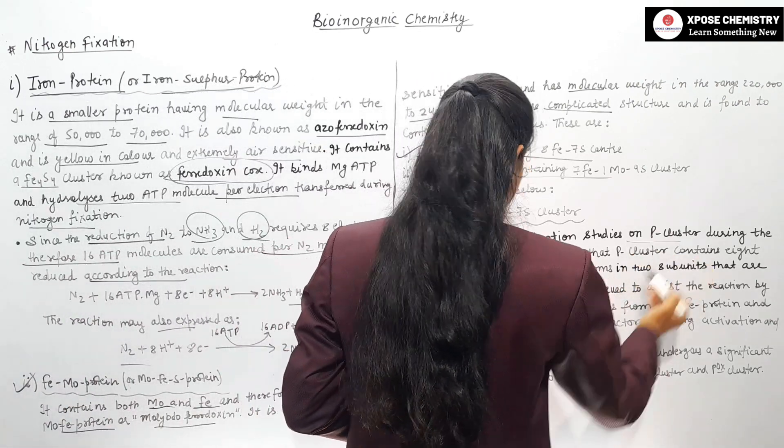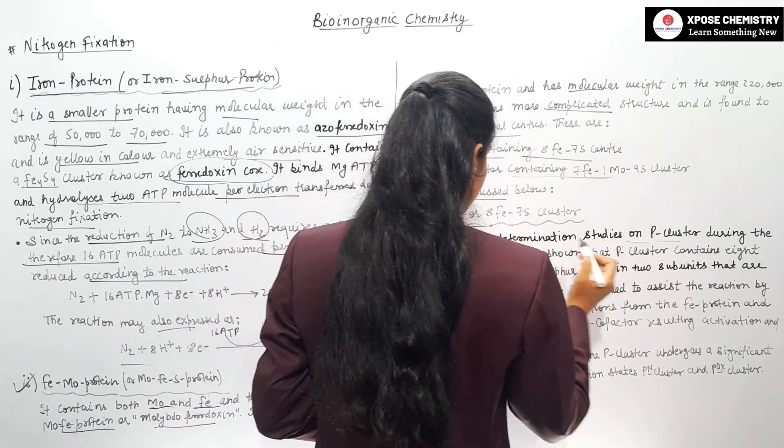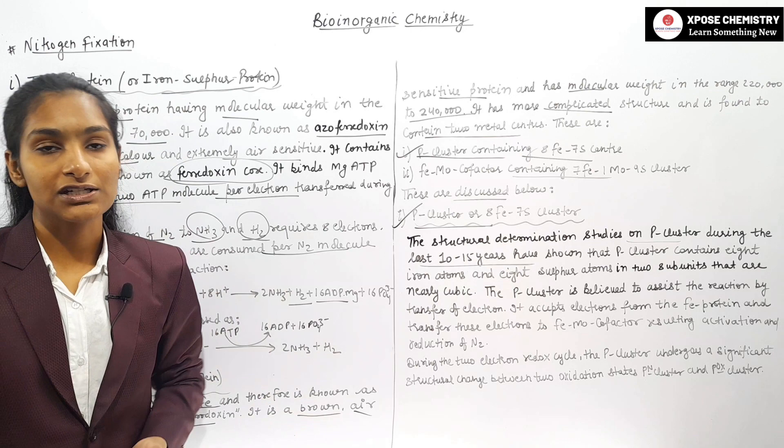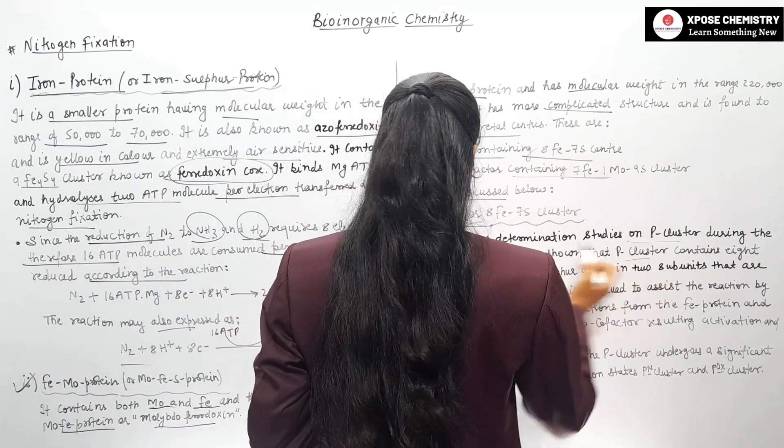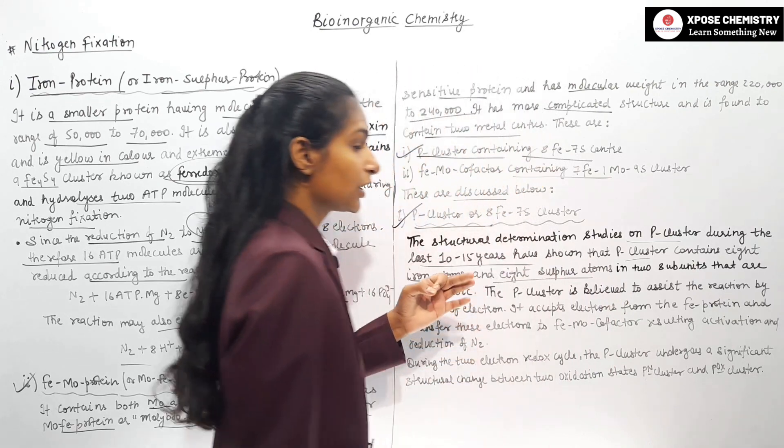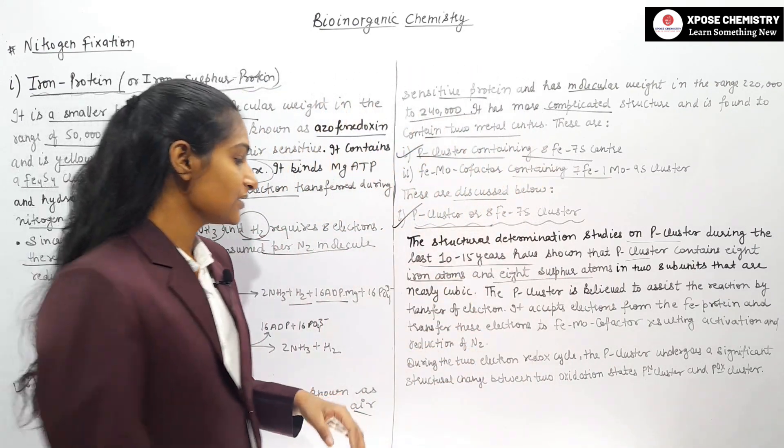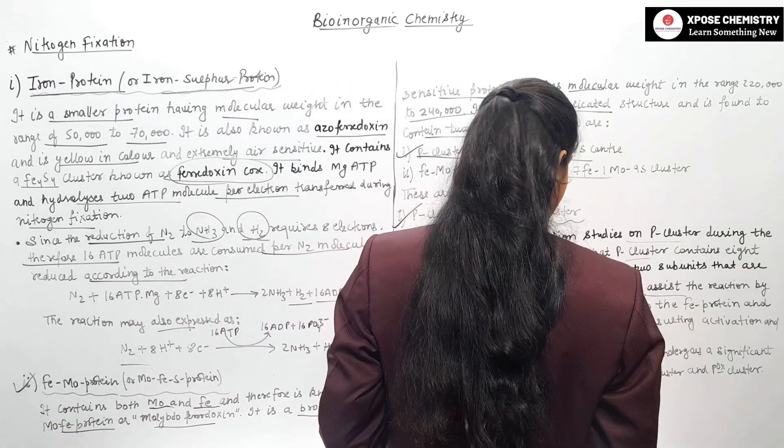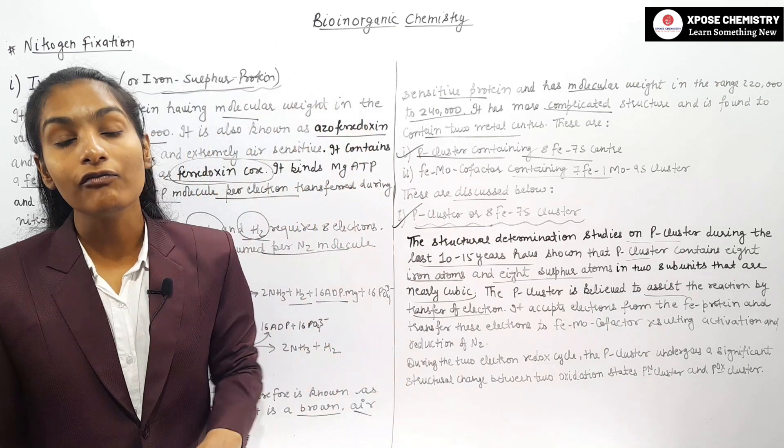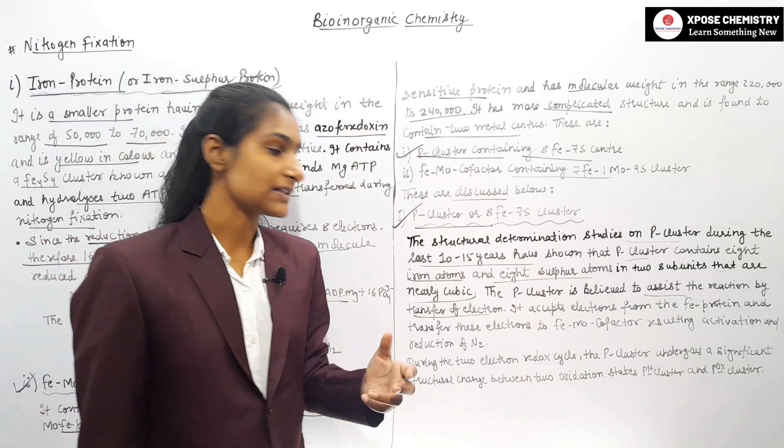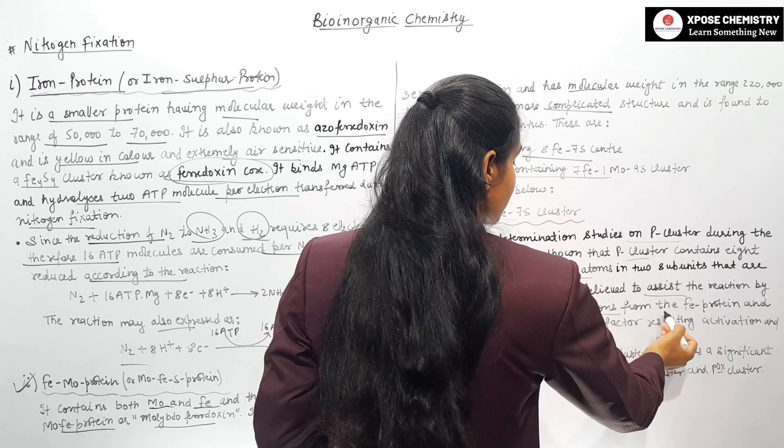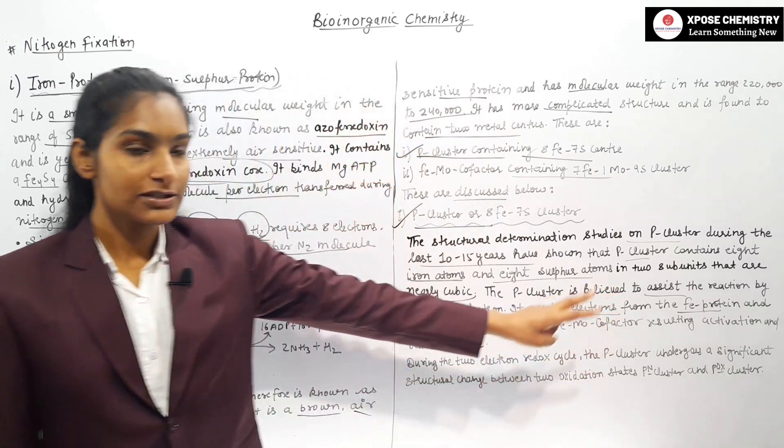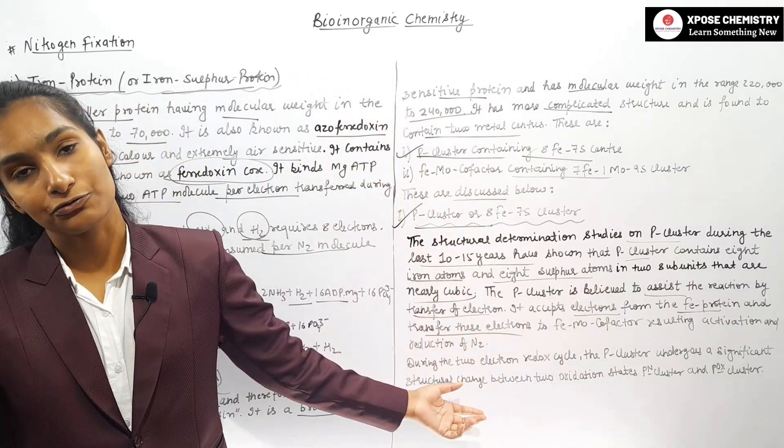The structural determination studies on P-cluster during the last 10 to 15 years show that P-cluster contains 8 iron atoms and 8 sulfur atoms in 2 subunits of nearly cubic shape. The P-cluster accepts electrons from Fe-protein and transfers electrons into Fe-Mo cofactor, which activates and reduces nitrogen.